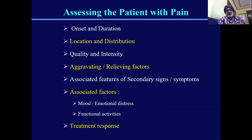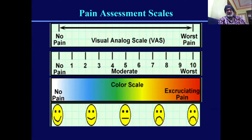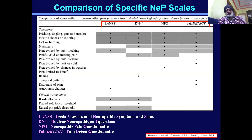Assessment is also important regarding the onset, duration, location, distribution, quality, aggravating factors, relieving factors, and mood and emotions — these all play a very vital role. Pain measurement is also very important. The standard tools are the VAS score, the color scale, or the Wong-Baker faces scale for children, which are used for all types of pain whether post-operative, cancer, or neuropathic pain.